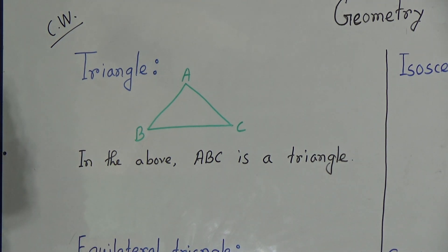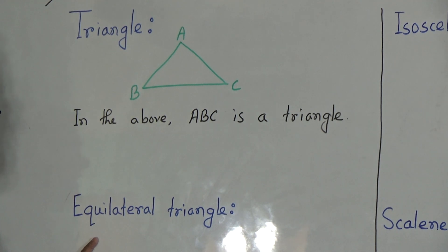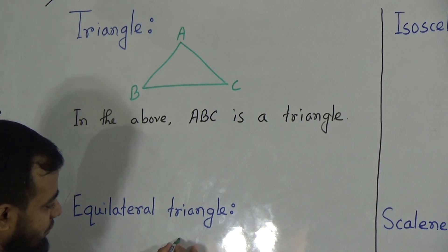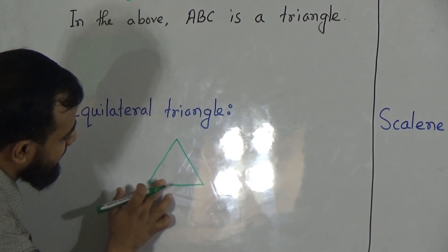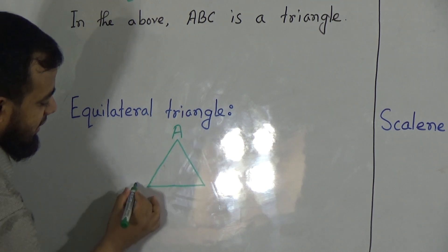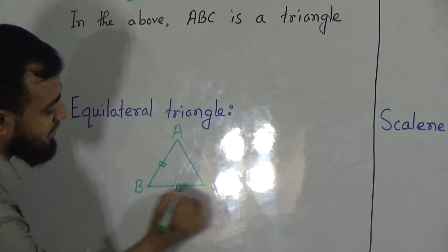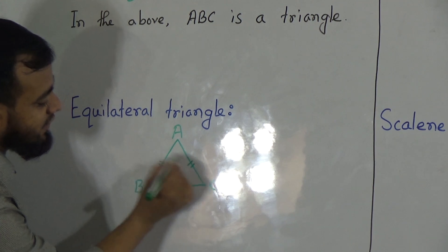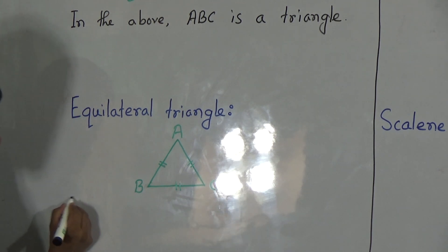Now, equilateral triangle. My dear students, which triangle has all three sides equal to each other, that triangle is called an equilateral triangle. So we should draw an equilateral triangle. You must draw the figure with a free hand — don't use the ruler or anything — and draw with a pencil. Suppose the vertices are A, B, and C, and all sides are equal: AB equal to BC equal to AC. So it's called an equilateral triangle. You must write the description of the drawing below the figure.